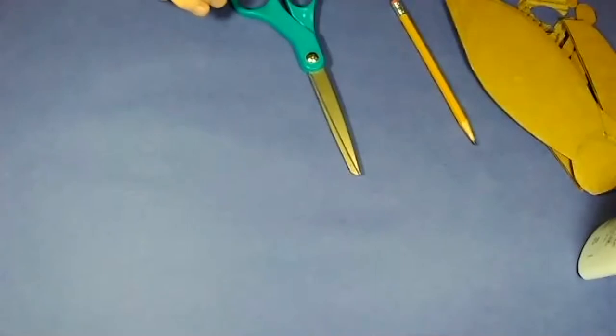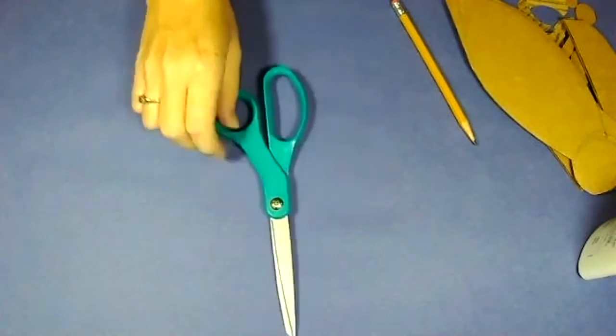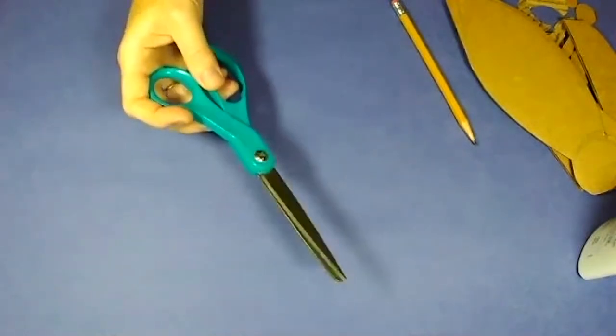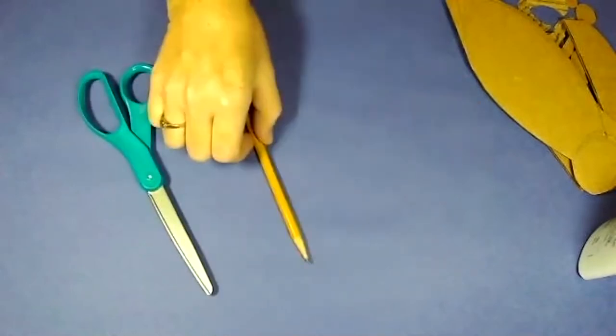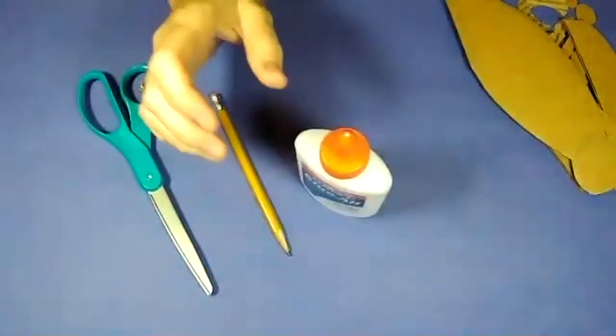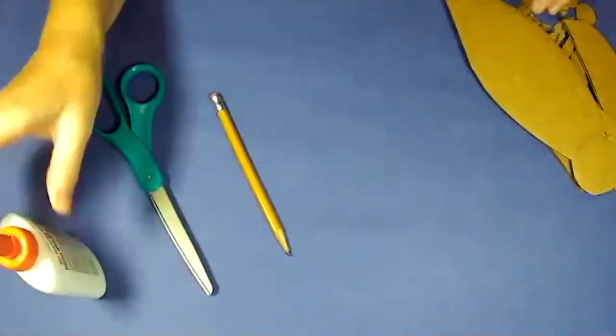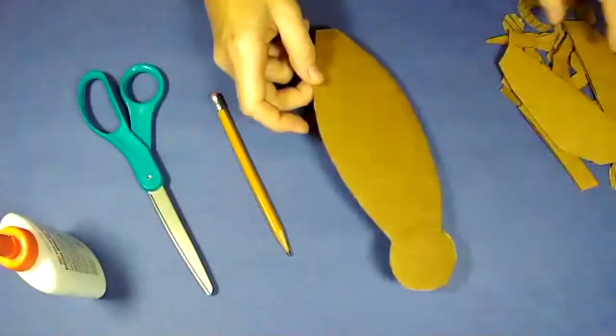All right you guys, so for today's cardboard bugs supply list is very simple. You need some scissors. I would pick some good sturdy scissors because we're going to be cutting cardboard. Pencil, some Elmer's, well it doesn't have to be Elmer's glue, but some bottle glue is going to work best. Tacky glue would be great if you have it, and then some cardboard.